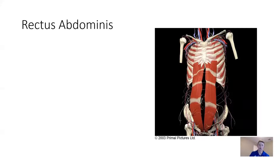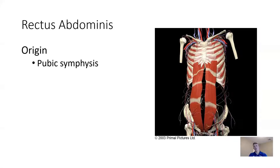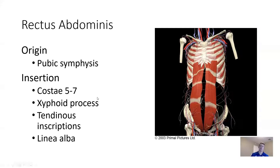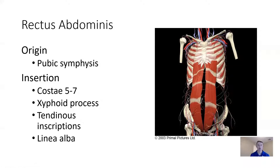The first one we'll talk about is rectus abdominis — everybody's favorite, the beach muscle, your six-pack or eight-pack. Each individual fiber or set of fibers moves from one edge to another tendinous inscription, so these are individual sections of the rectus abdominis. They all have their origin on the pubic symphysis, anterior on the pelvis, and then an insertion on costal 5 through 7, the xiphoid process, each individual tendinous inscription, and the linea alba, which runs right down the middle.